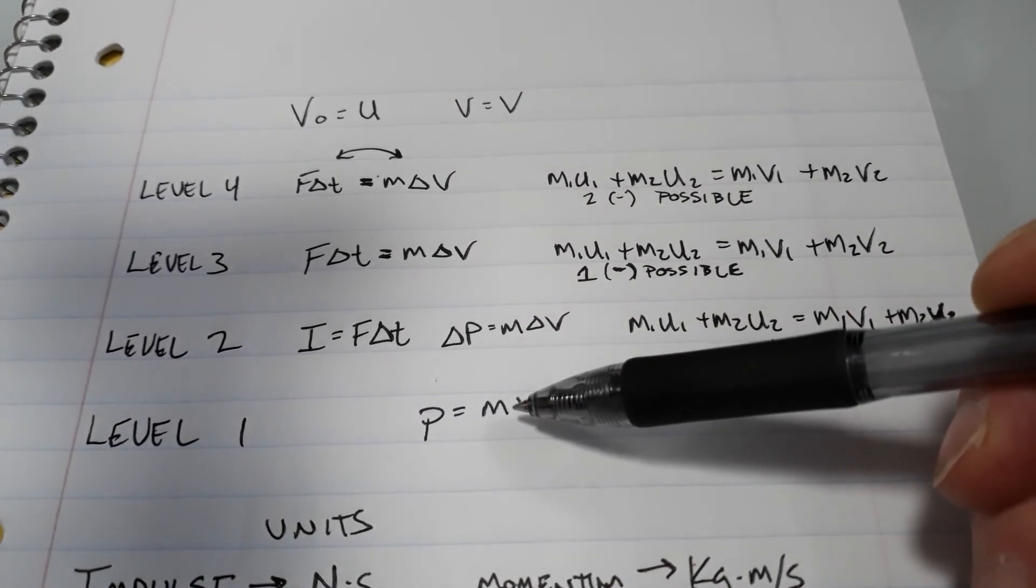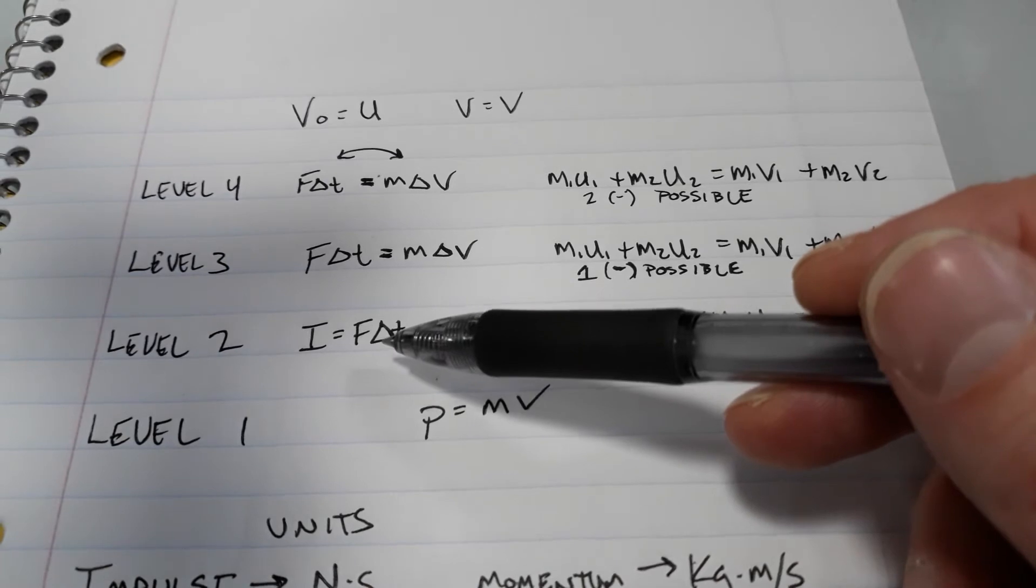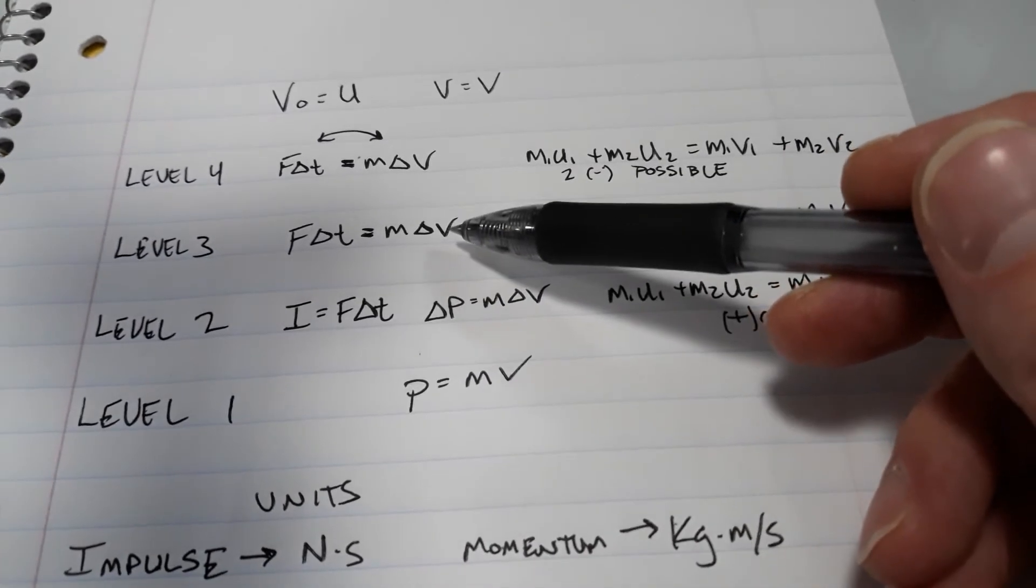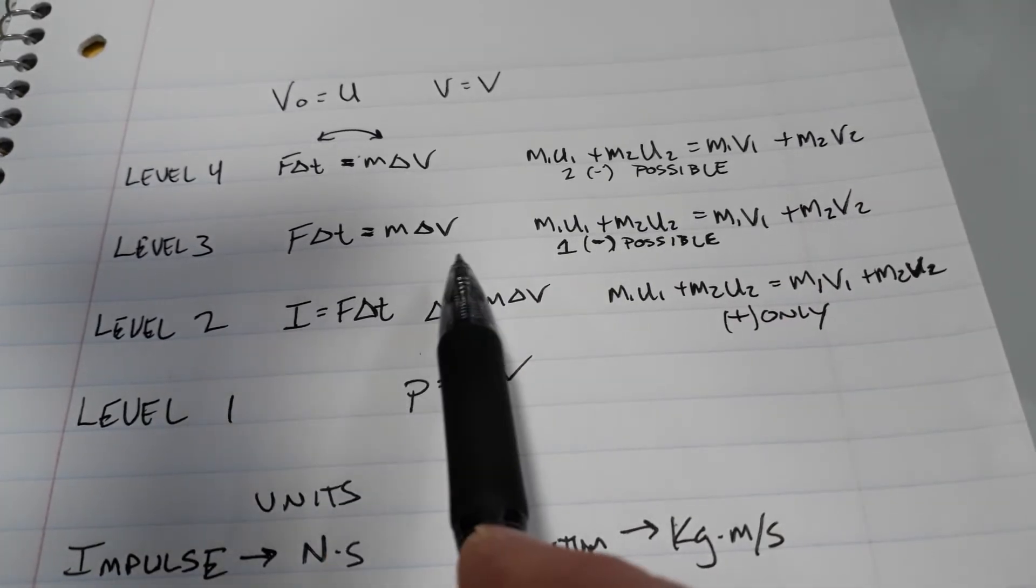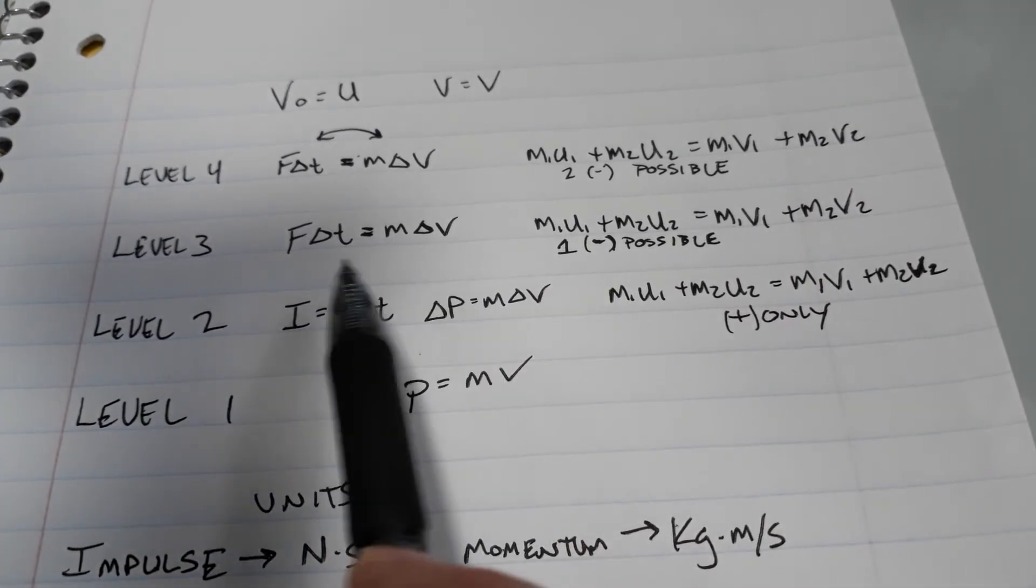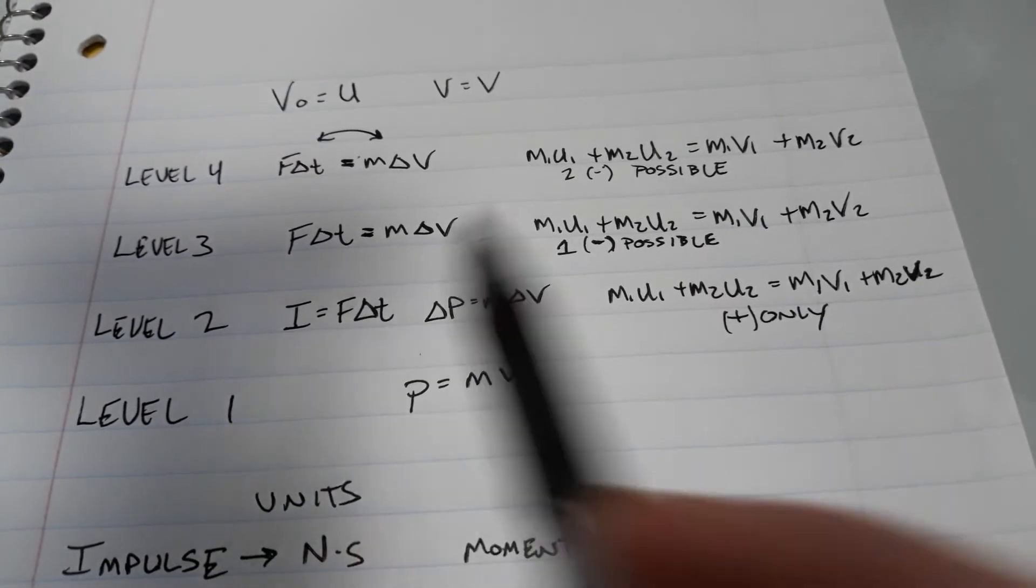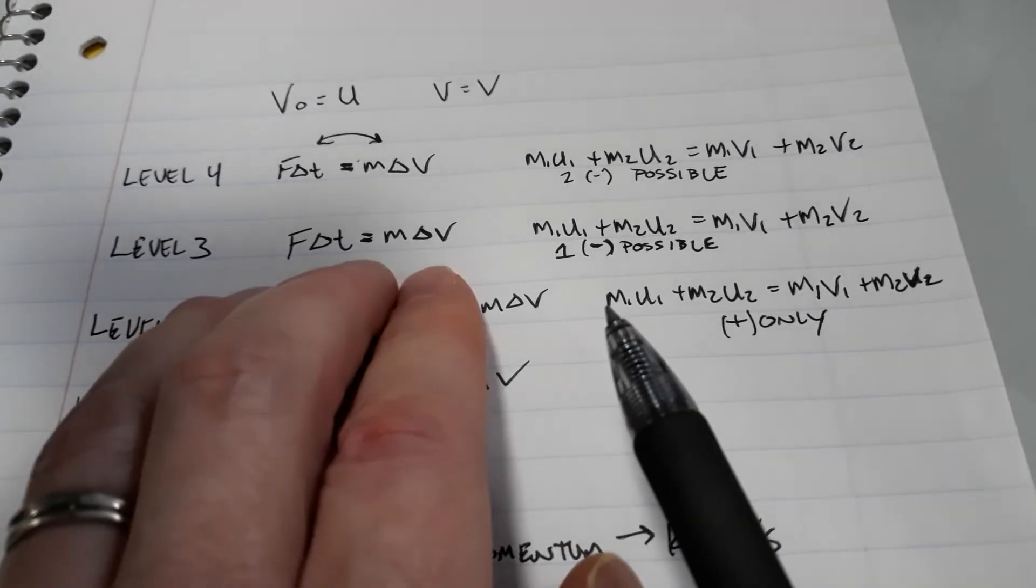So at level one, it's just the momentum. At level two, the change in momentum and separately we'll calculate impulse. At level three, we'll put the whole thing together. This is the impulse equation. It says that the impulse changes the momentum. If you multiply the force applied times the amount of time to change that momentum, it will tell you how much the momentum changed by.